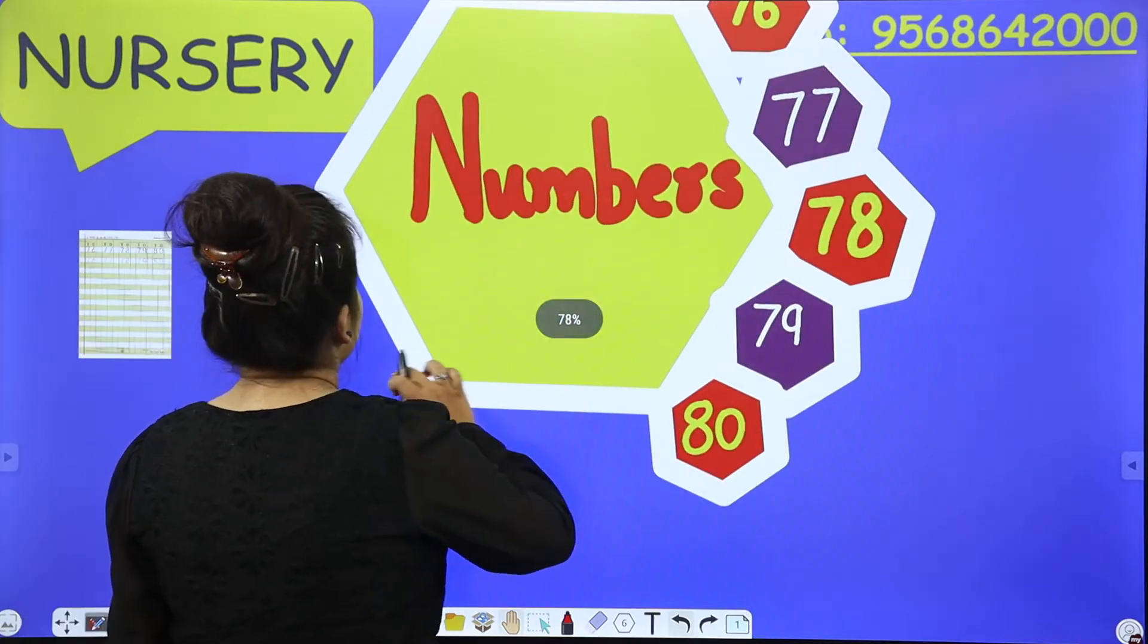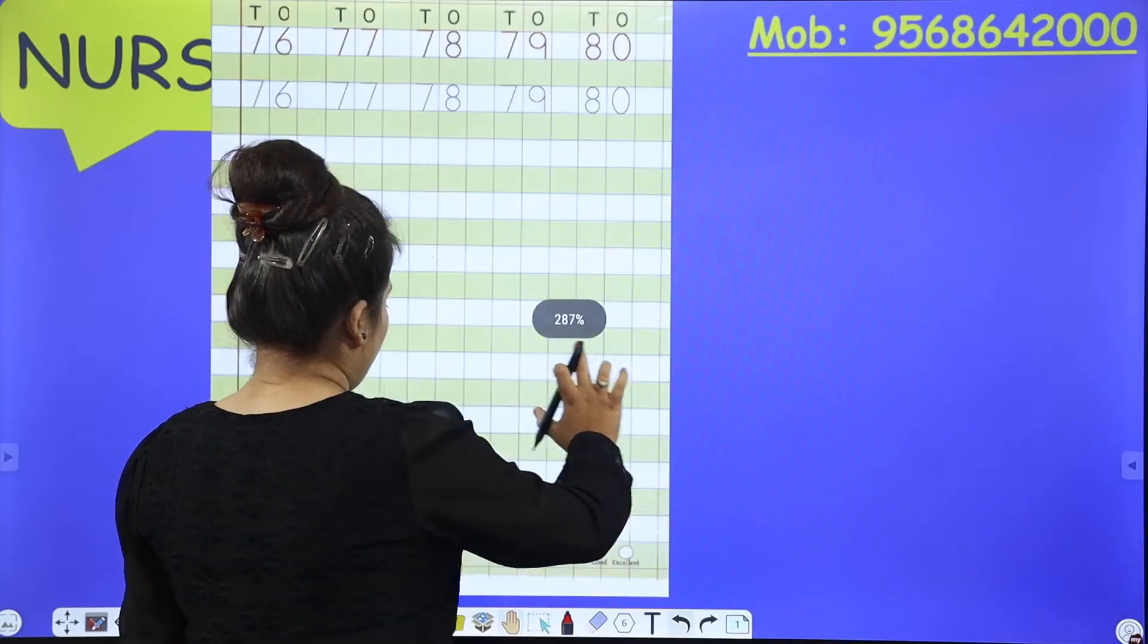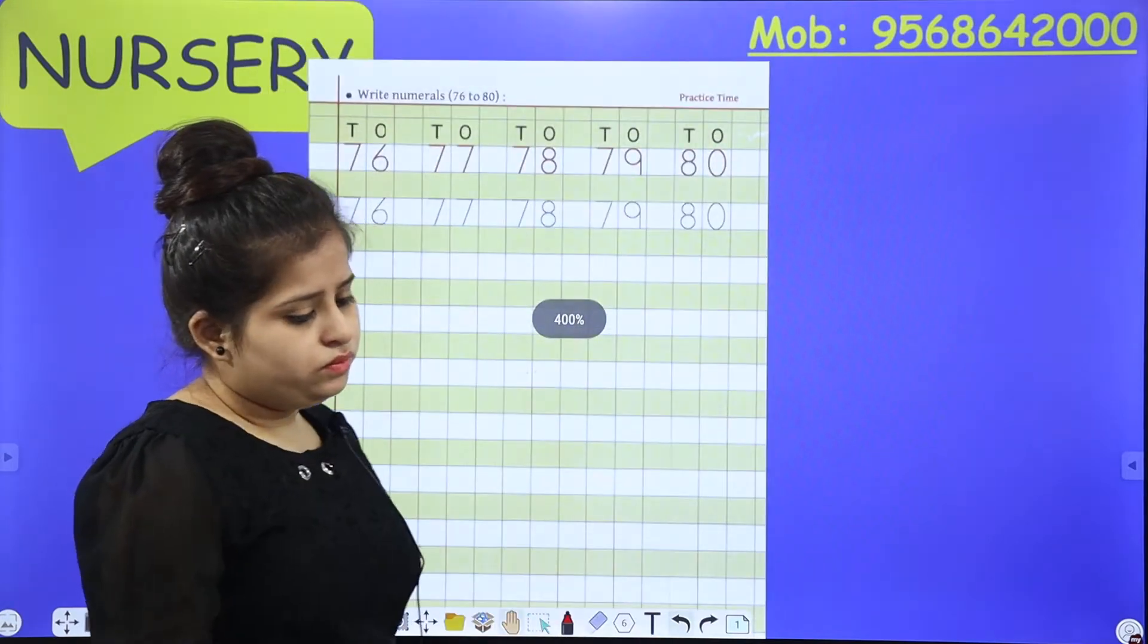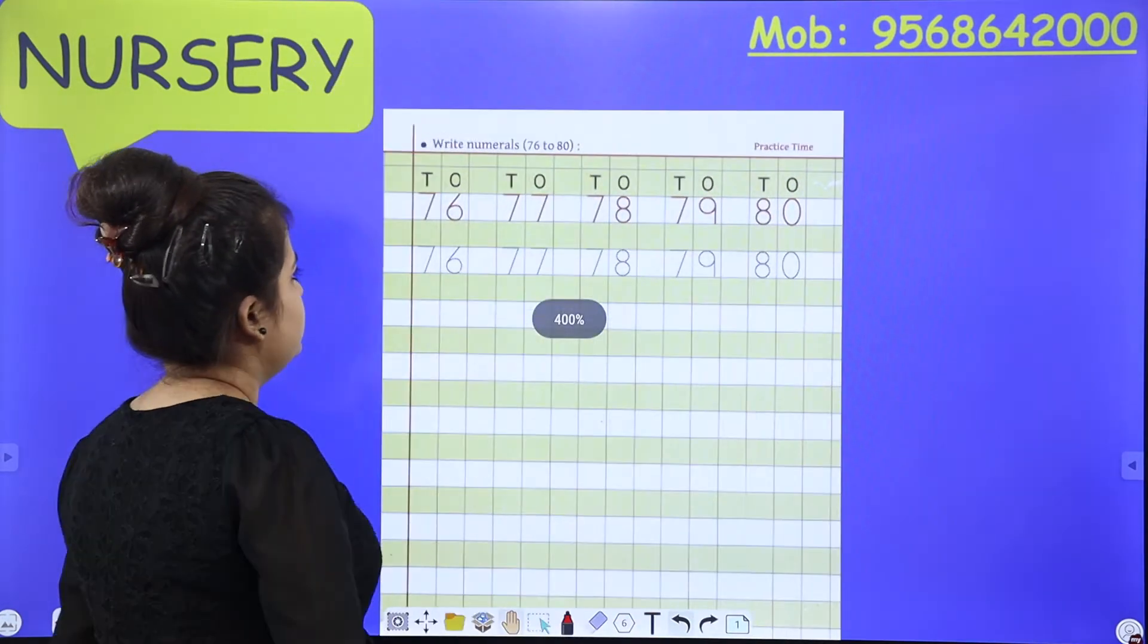Open your workbook to page number 104. So what have you to do? Mention the date at the bottom.